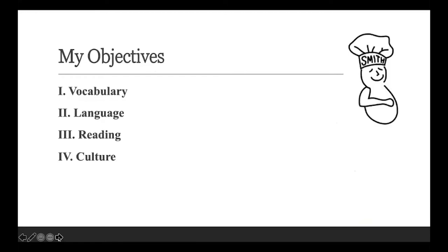My measurable objectives break down into four major categories: vocabulary, language, reading, and culture. I've taken Cambridge's objective of reading and parsed it out to give students more specific feedback as they go through the Cambridge Latin Course and beyond. I have a separate section for habits of mind, but vocabulary, language, and culture all funnel into reading. Of my five major objectives, reading is the central component.